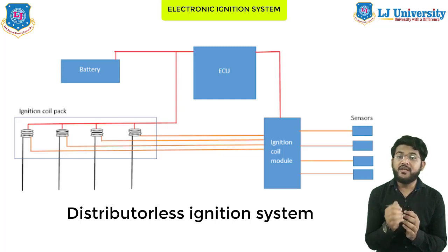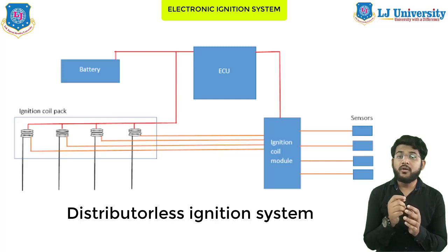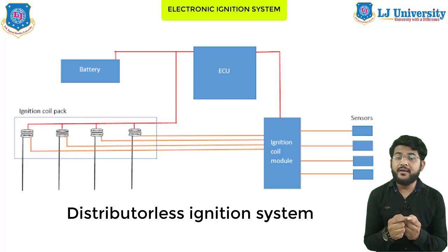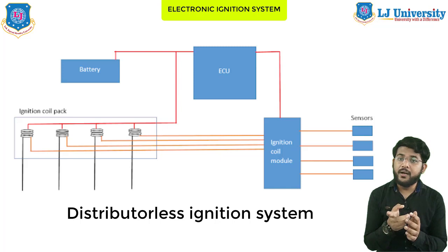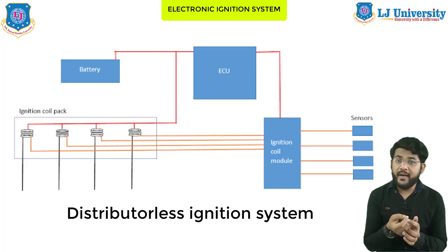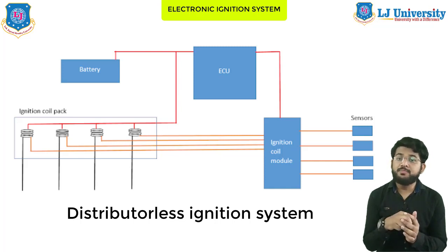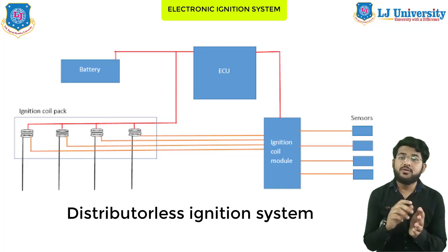The ignition coil pack is a feature of the DLI system. A coil pack consists of several mini coils — generally either dual coil pack with two coils, or single coil pack with four coils. For a dual coil pack, one coil is used for two spark plugs, causing two spark plugs to ignite at the same time. In a single coil pack, one coil is used for each individual spark plug, so all spark plugs ignite alternatively on their own.